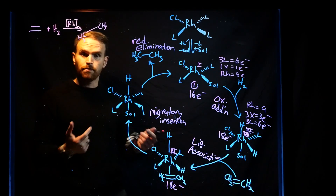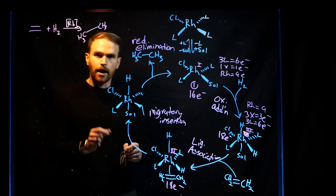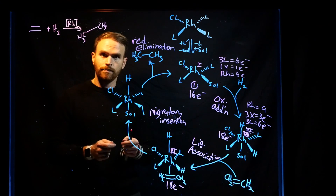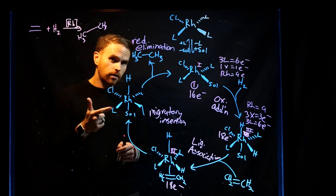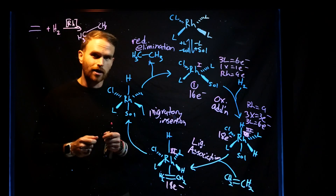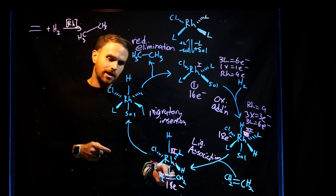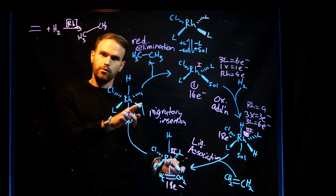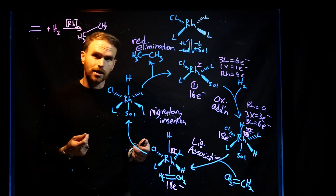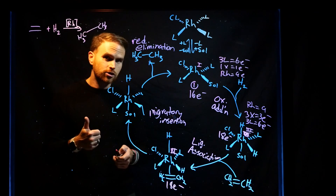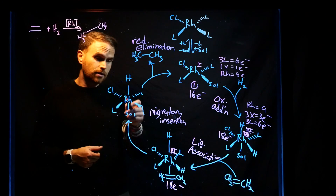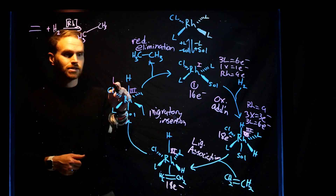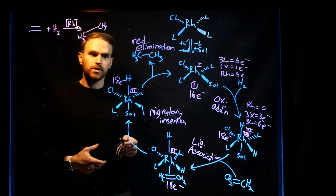The next step is migratory insertion. Importantly, migratory insertion has absolutely no impact on the electron count or the oxidation state — notice you are replacing an L-type ligand for another L-type ligand, and an X-type ligand for another X-type ligand. So nothing about the oxidation state or electron count has changed. This means overall this is still a Rh(III) species and still 18 electrons — a stable species.